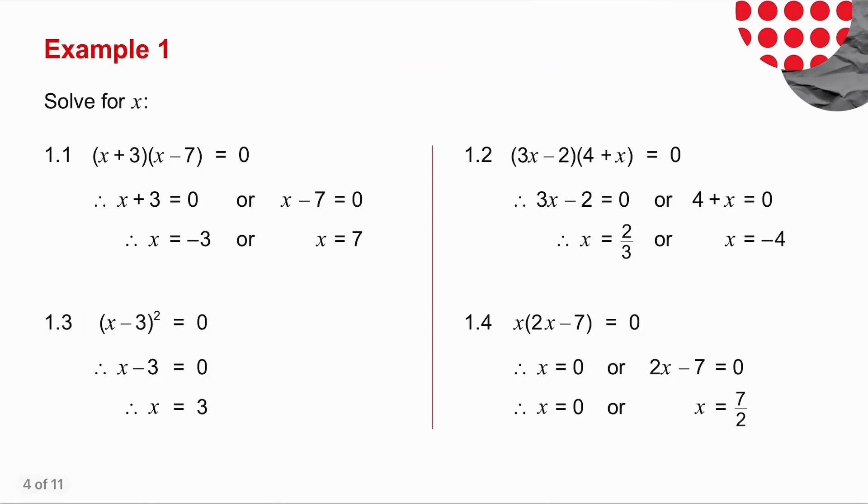So in the first example, I've got two brackets multiplied to give me 0. So how do I get two things to multiply to give me 0? One of them has got to be equal to 0. So either x plus 3 equals 0, in other words, x is equal to minus 3, or x minus 7 must be 0, in other words, x must be equal to 7.